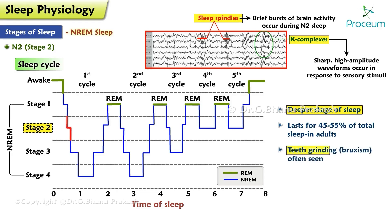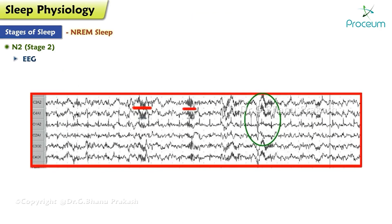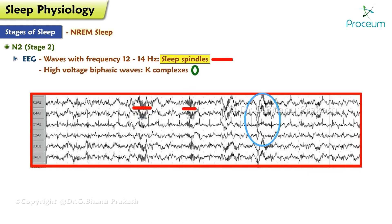Teeth grinding, or bruxism, is often seen during stage N2. The electroencephalogram shows waves with a frequency of 12 to 14 hertz called sleep spindles, and high-voltage biphasic waves called K-complexes are also seen.